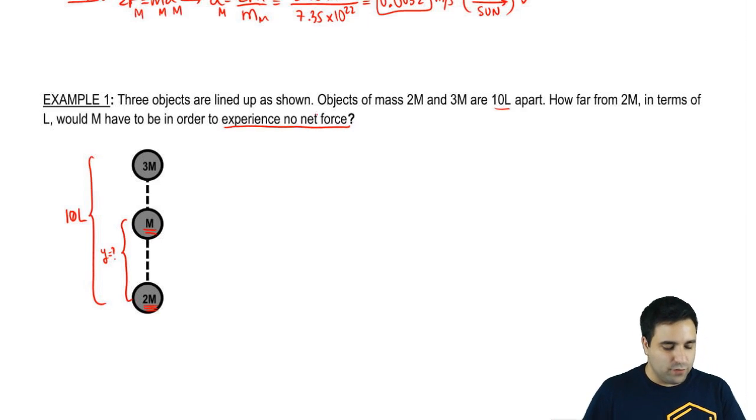Experience no net force means that the sum of all forces on m equals 0. So let's call this guy a, b, and c, and I want the sum of all forces on b to be 0. I hope you see that b is being pulled up by c. I can call that fbc, or just fc. And it's being pulled down by fa or fab. The idea is that if the net force is 0, these two forces cancel. So if the sum of all forces equals 0, it means that these two forces here will cancel.